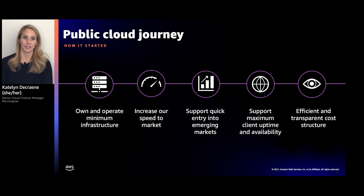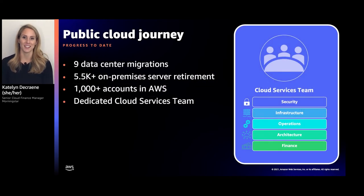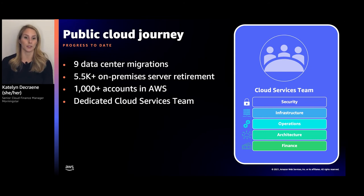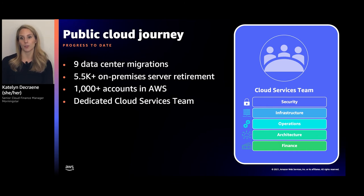Since our cloud journey, we've made quite some progress. We have performed nine data center migrations — six are complete and three are still in progress. We've migrated over 5,000 servers on-prem globally and have over 1,000 accounts active in AWS. Our COE has evolved and become a full-time dedicated cloud services team, which includes several squads covering security, operations, and infrastructure. Our team is responsible for providing technical guidance and controls and guardrails to enable teams across Morningstar to be successful in public cloud.